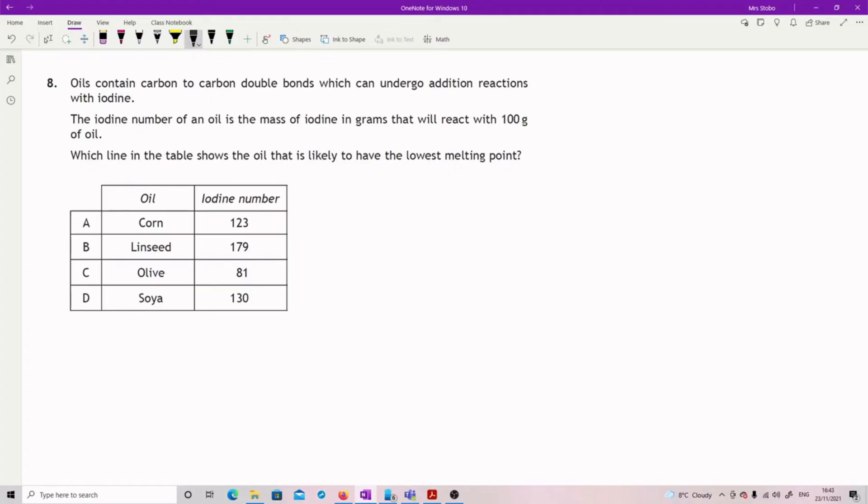So what we've got here is the more iodine you have, the more unsaturation, which would be more oily. The more oil that will react with it, the more double bonds we must have had. So the line on the table that shows the one to have the lowest melting point, the most oily thing that we can find, would be the thing with the highest iodine number. So therefore B.